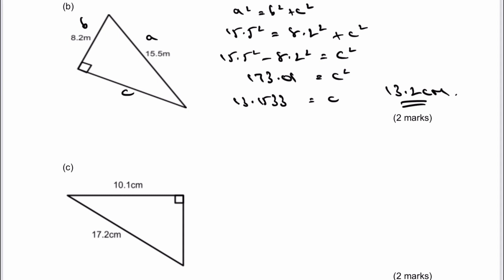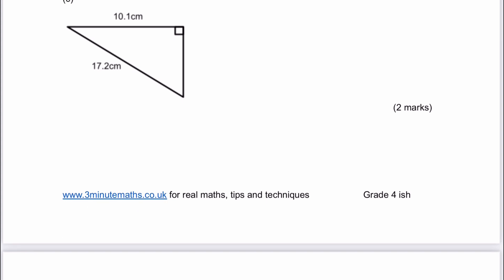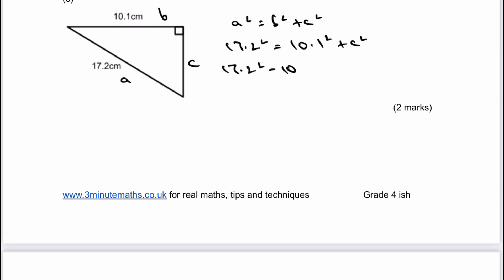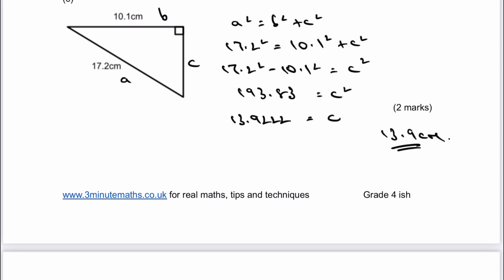It really is just a case of putting in the information that we've got and then working out the unknown side. My hypotenuse is going to be a. So I'm going to write a squared equals b squared plus c squared. I'm going to say that 17.2 squared — I'm going to call this one b and the unknown c. I like to actually show all of my working and then pick up the calculator at the very end. So c, which is the unknown side, is going to be 13.9222. So to one decimal place, that's going to be equal to 13.9 centimetres. And that would be two marks for this sort of question.